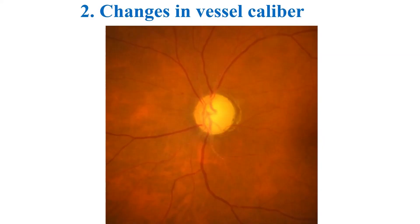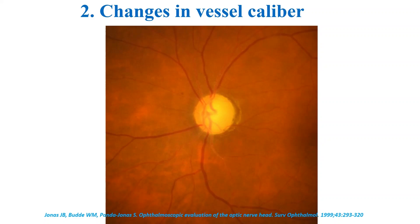Retinal artery attenuation, or reduction in retinal vessel diameter, can also occur in glaucoma. The narrowest vessels occur in association with areas of greatest neuro-retinal rim and retinal nerve fiber layer loss.